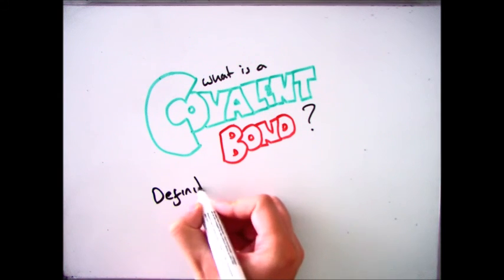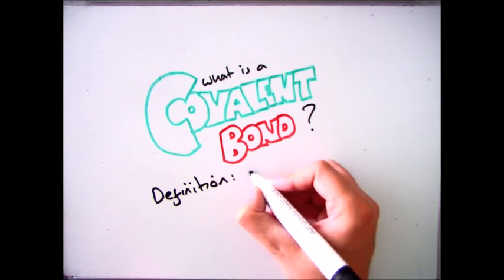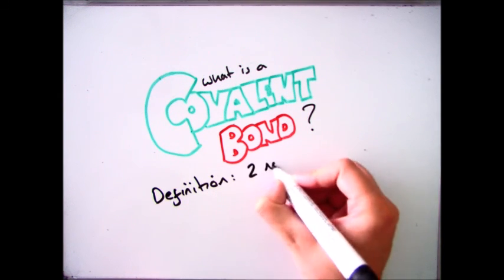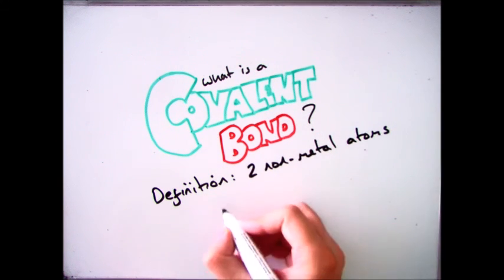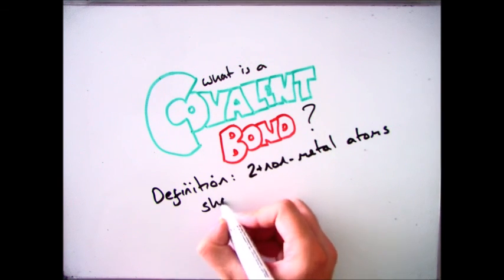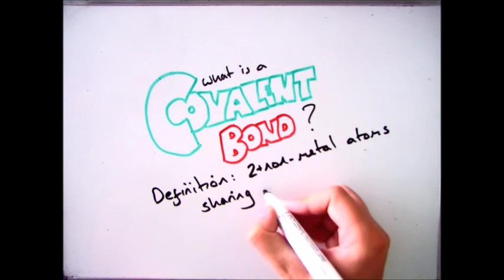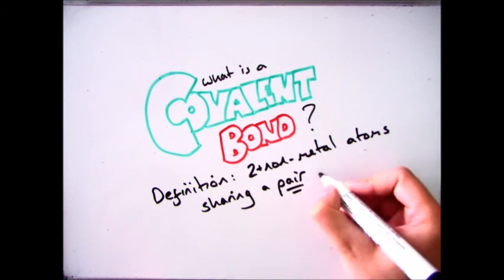So if we were to look at a definition for what a covalent bond is, we talk about nonmetals — in this case we need two nonmetal atoms, or two or more nonmetal atoms — and they are sharing a pair of electrons.